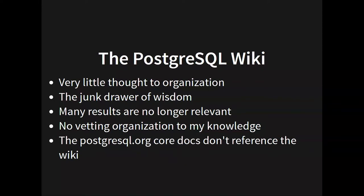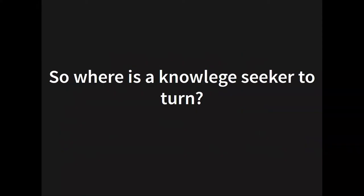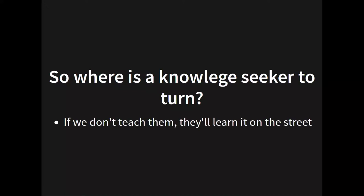There is occasional reference from the wiki to the Postgres docs, but there is obviously no reference the other direction, which would be very difficult to maintain. So if we were looking to push a lot of this information off onto the wiki itself, the core documentation isn't doing us any favors. If you have a question, where are you going to go? We really ought to have an answer for this because otherwise people could find the wrong answer.